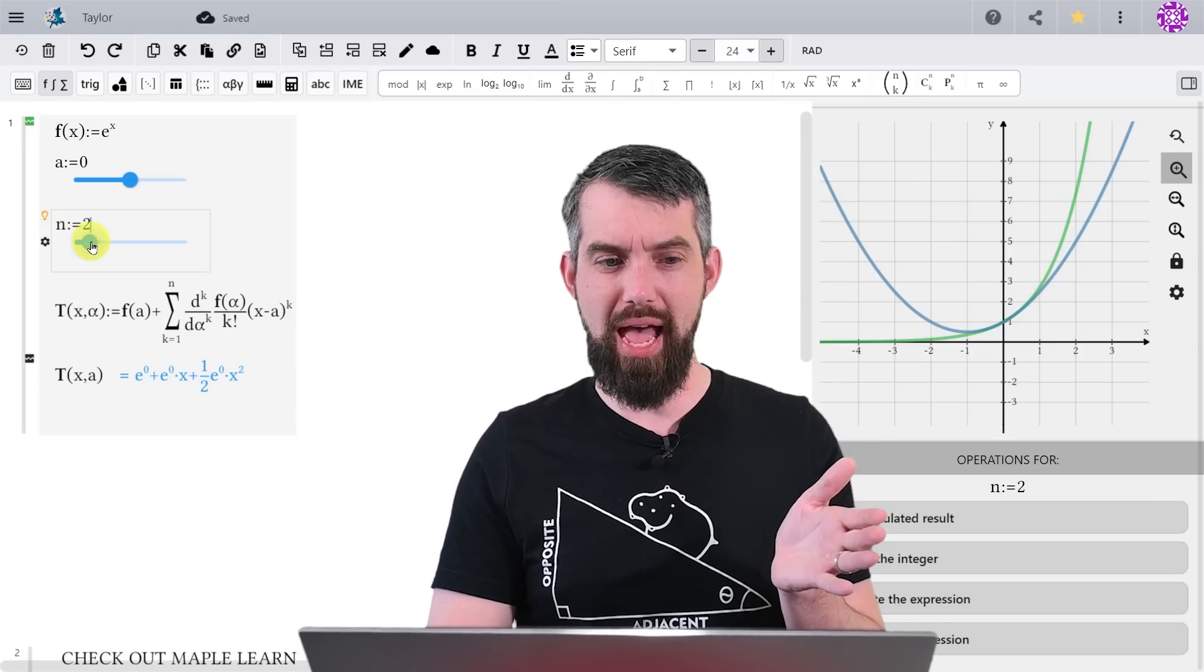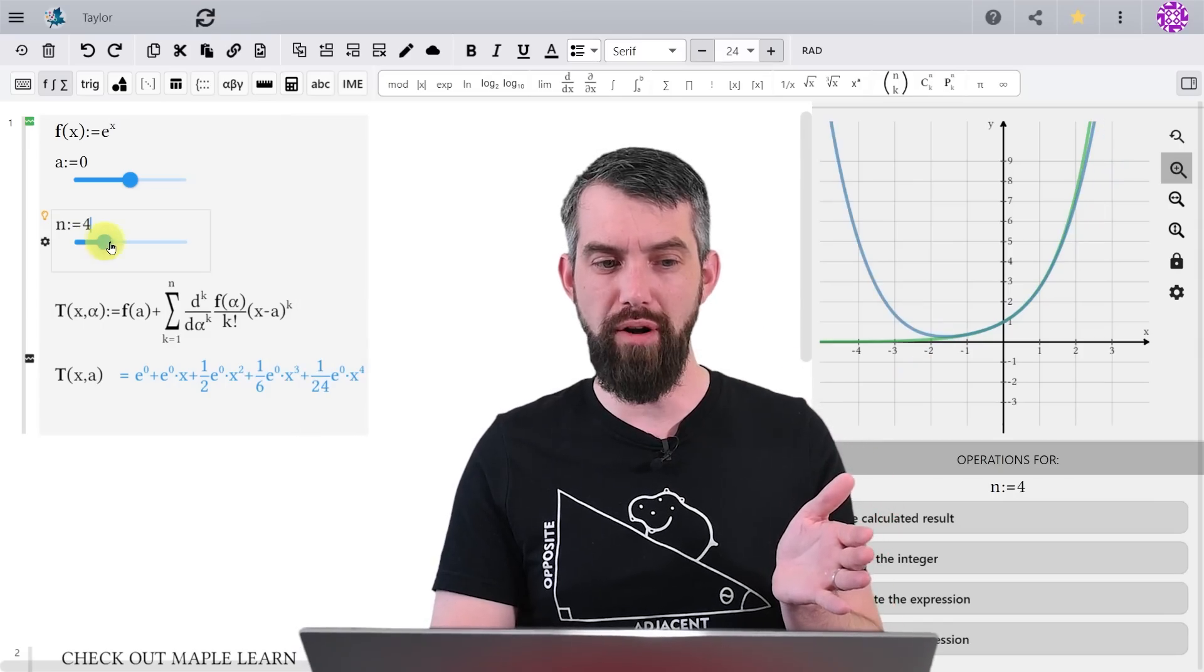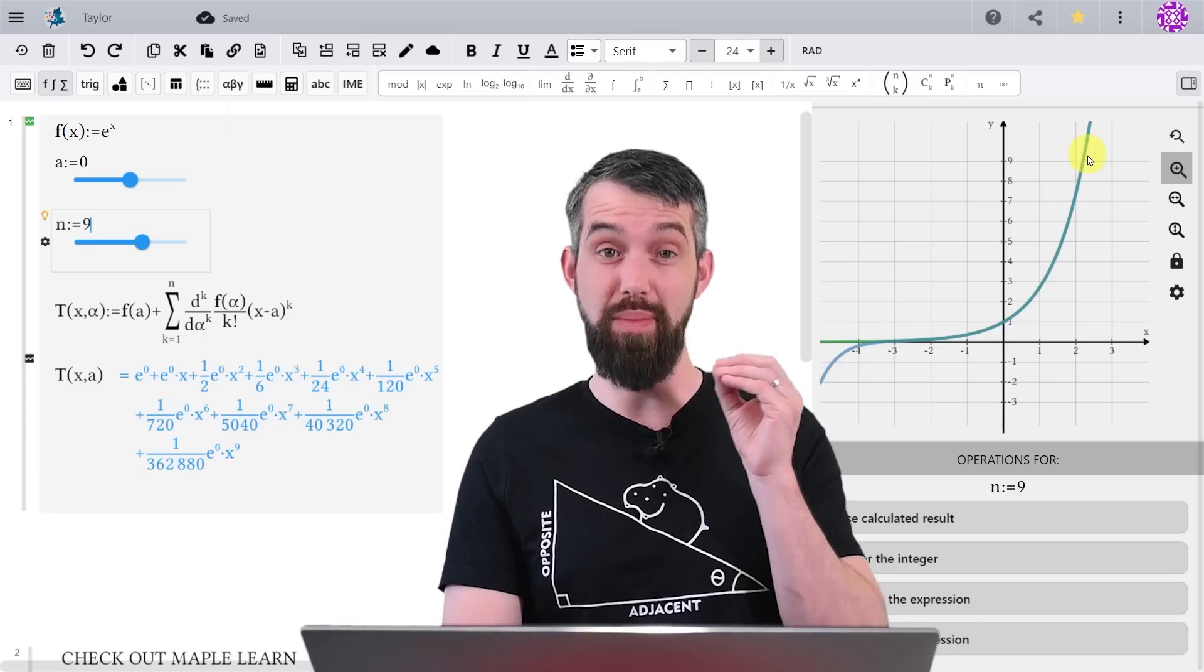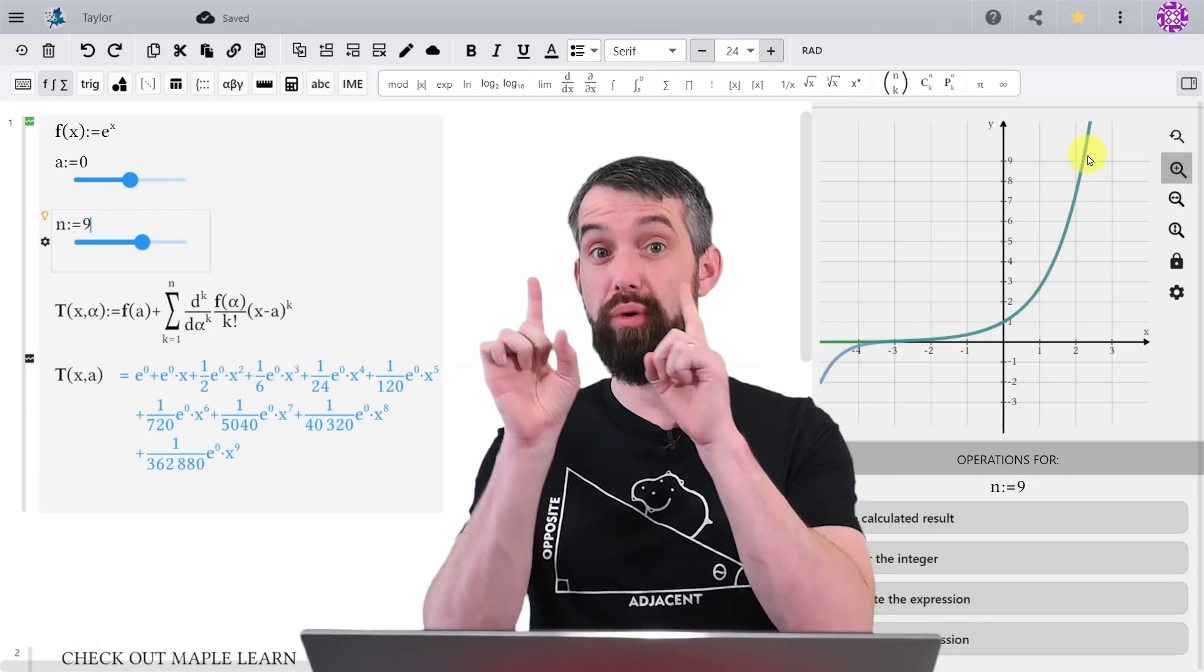And then if I just take the slider and add 3, 4, 5, and more terms, I just get a better and better approximation. So that's the big idea of a Taylor approximation.